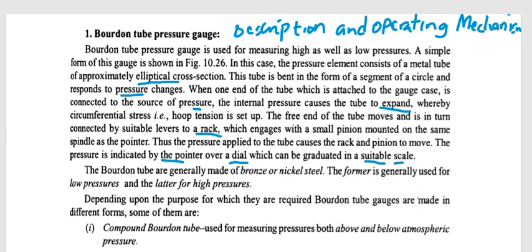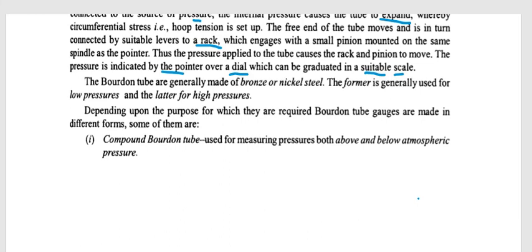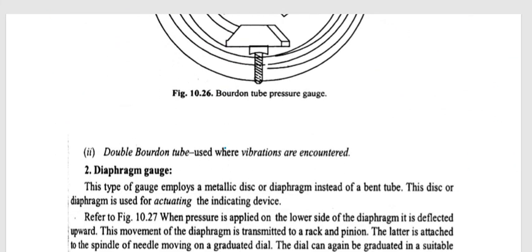Bronze is generally used for low pressures and nickel steel for high pressures, depending upon the purpose for which they are used. Bourdon tube gauges are made in different forms; some of them are the compound tube, used for measuring pressures both above and below atmospheric pressure. There is also a double Bourdon tube, which is used where vibrations are encountered.